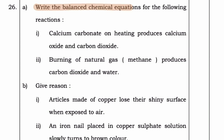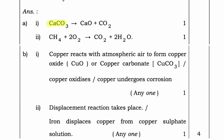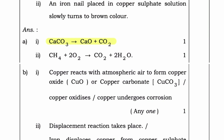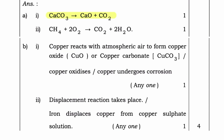Question A: Read the balanced chemical equation for the following reactions. Reaction 1: Calcium carbonate on heating produces calcium oxide and carbon dioxide. CaCO₃ → CaO + CO₂. Reaction 2: Burning of natural gas methane produces carbon dioxide and water. CH₄ + 2O₂ → CO₂ + 2H₂O.